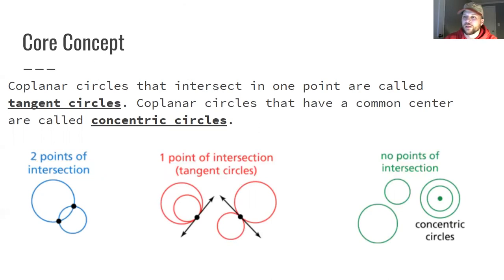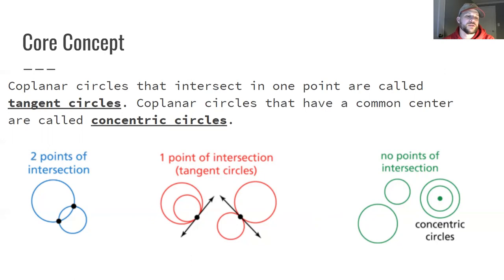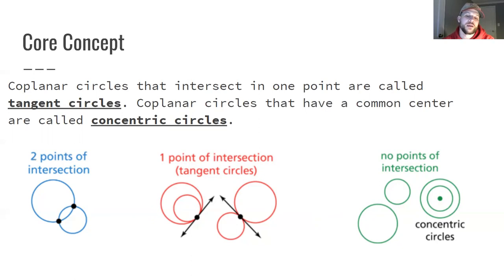Two coplanar circles that intersect at one point are called tangent circles, and coplanar circles that share a common center are called concentric circles. In the diagram, the two blue circles have two points of intersection. The red circles are tangent circles with one point of intersection — either a smaller circle inside a larger one touching at one point, or two circles touching externally. The green concentric circles have the same center but do not intersect at all.